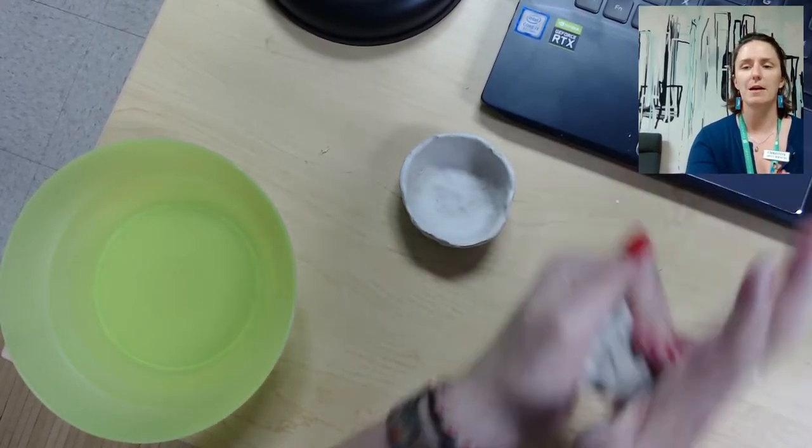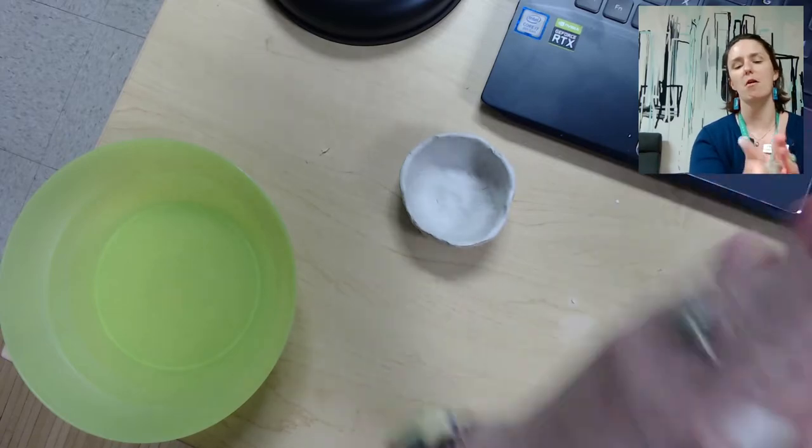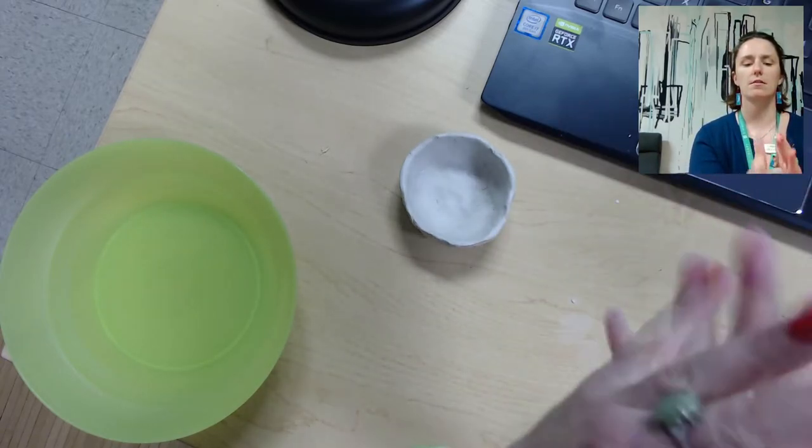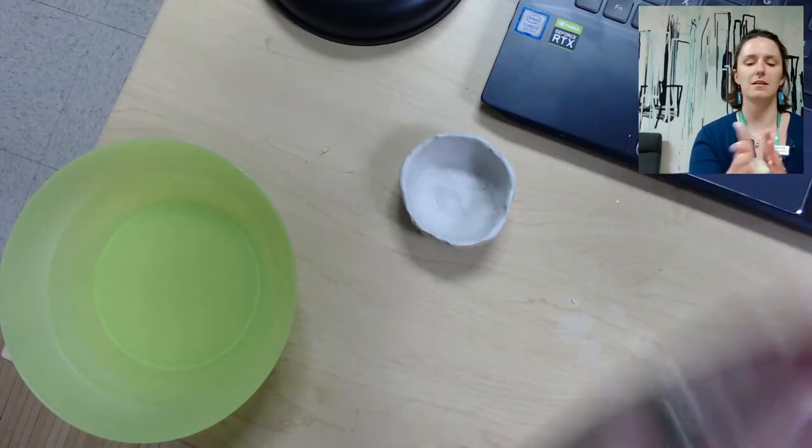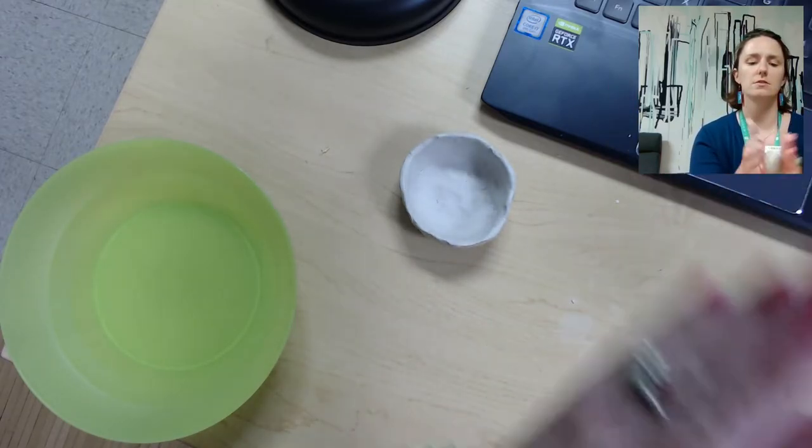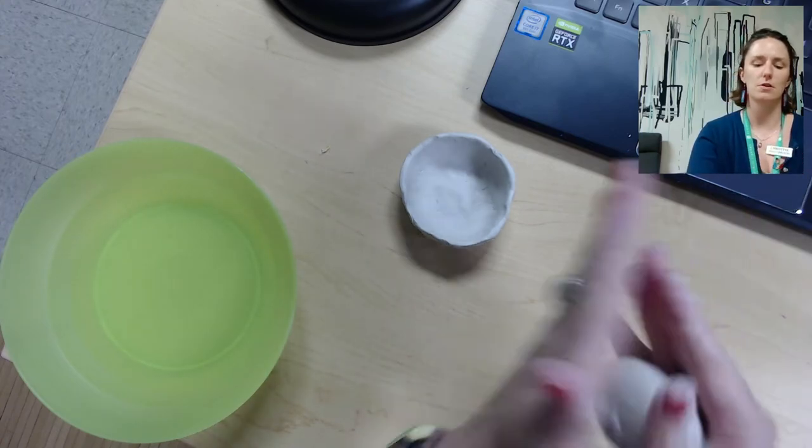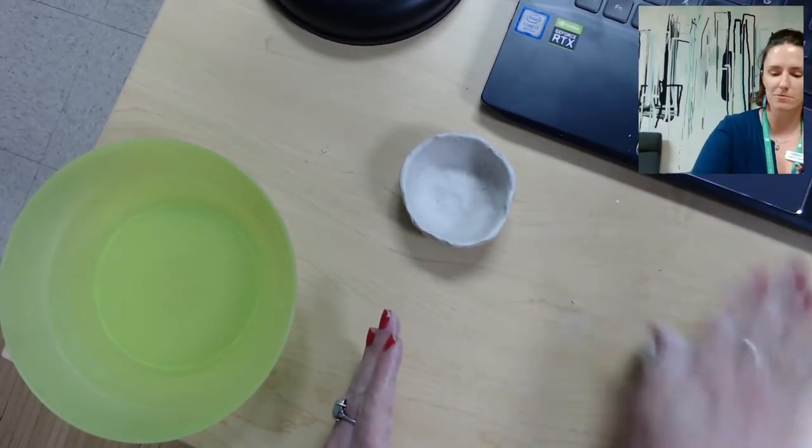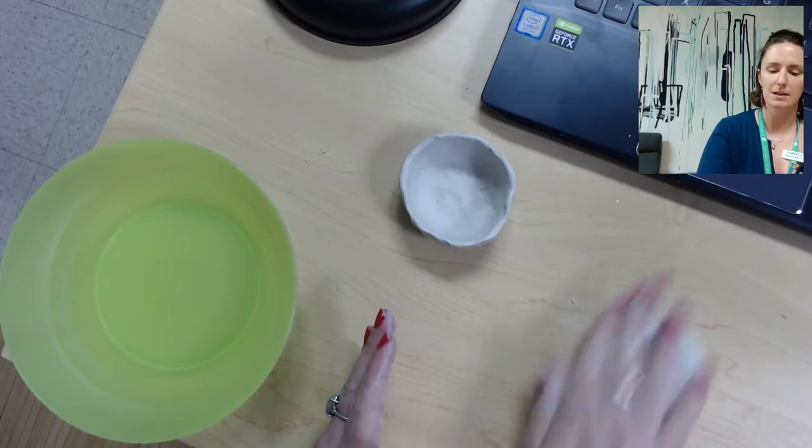Alright, so once it's a little bit pliable, you're going to just roll it in a ball. Make it, use the palms of your hand, and just make it into a globe. You can also use the table and roll it this way just to make a nice little sphere.